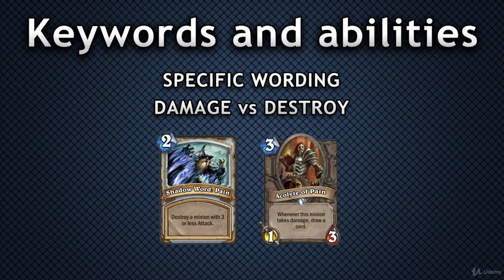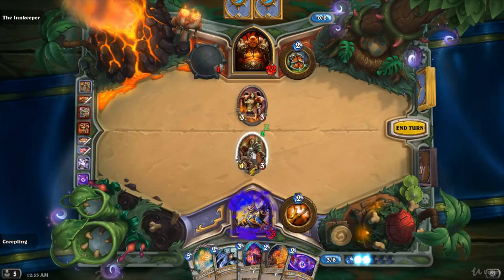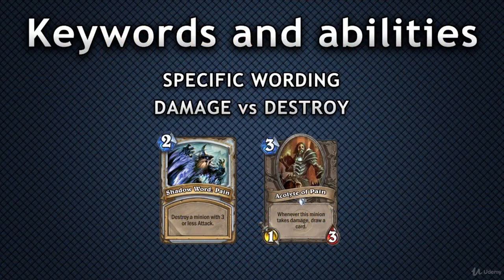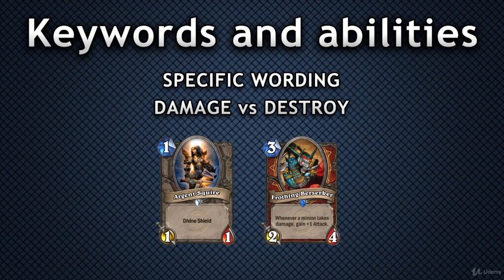The act of destroying a minion will not trigger any effects which would require it to be damaged. That's why if you use Shadow Word: Pain on an Acolyte of Pain, it will not draw any cards. Dealing damage must necessarily leave the minion damaged — indicated by the red color of its health value — or killed if it had less health than the damage it took.